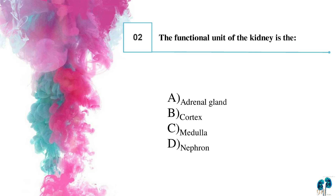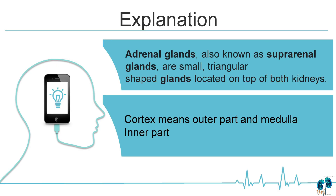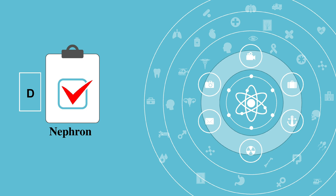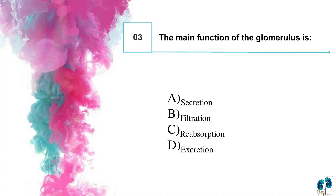The functional unit of the kidney is: option A, adrenal gland; option B, cortex; option C, medulla; option D, nephron. The adrenal gland, also known as the suprarenal gland, is a smaller triangular-shaped gland located on top of both kidneys. Cortex means outer part and medulla means inner part. The right answer is option D, nephron.